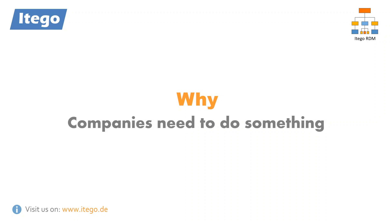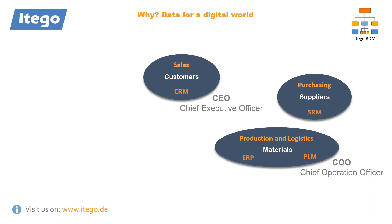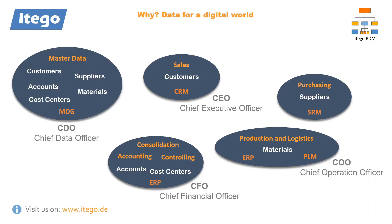It affects every part of your business. For example, if a CEO wants to keep track of his sales processes, he needs to be informed about his customers, which is a master data object. As a COO in purchasing and logistics, you need to keep track of your supplies and materials. As a CFO, you need to manage the company's cost controlling, keeping track of your accounts and cost centers, which are master data objects. And as a Data Officer, you support all of the previous roles in having high quality data available, and that starts with master data and reference data.